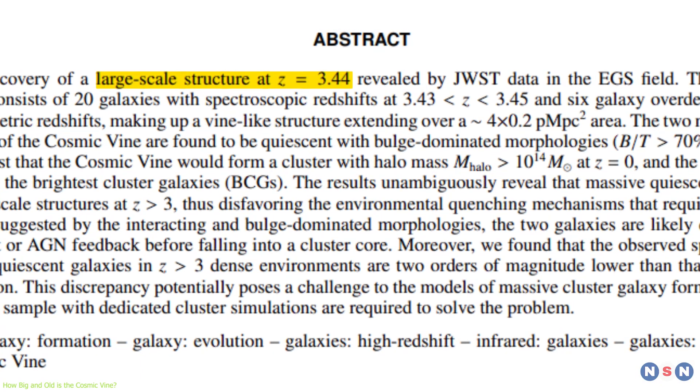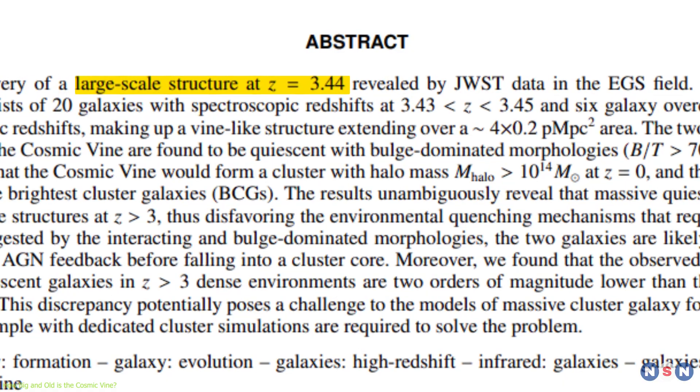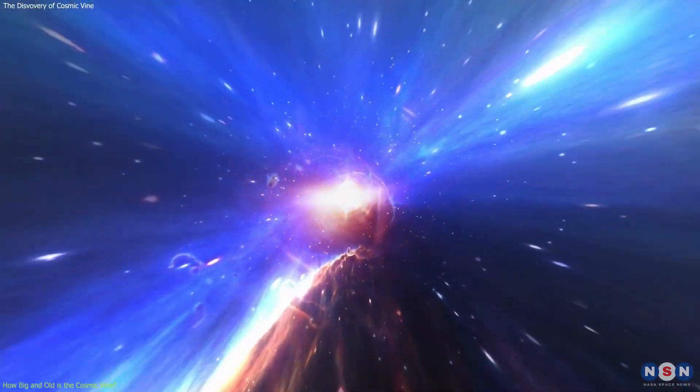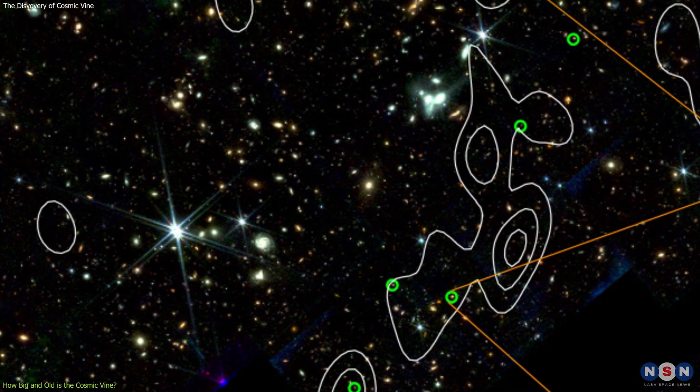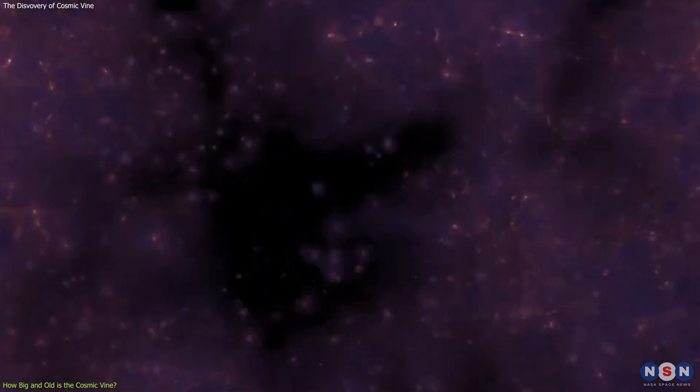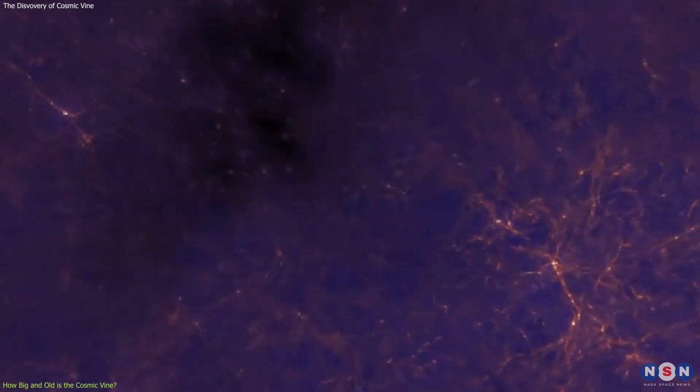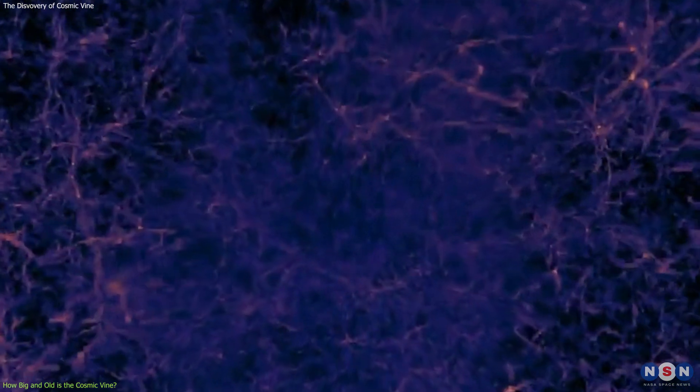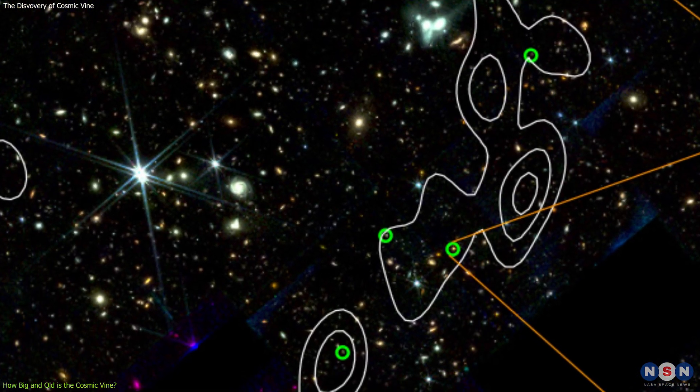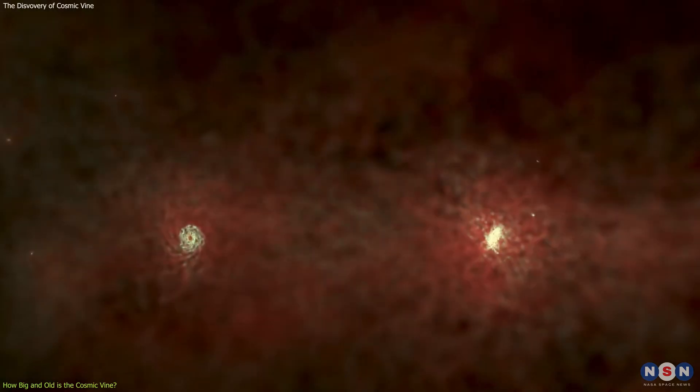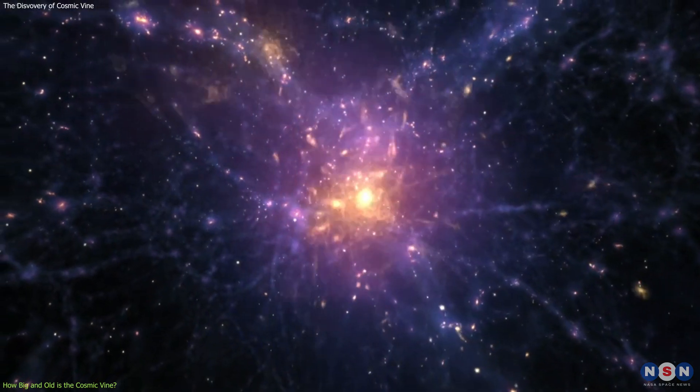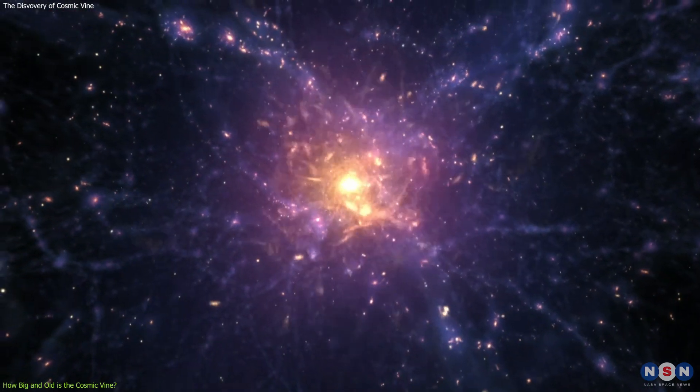The Cosmic Vine is located at a redshift of 3.44, which means it is about 11.8 billion light years away from us. This also means that we are seeing the Cosmic Vine as it was when the universe was only about 1.8 billion years old, which is about 13% of its current age. This is why the Cosmic Vine is so important, because it shows us how galaxies formed and evolved in the early universe, and how they were connected by the cosmic web of gas and dust.